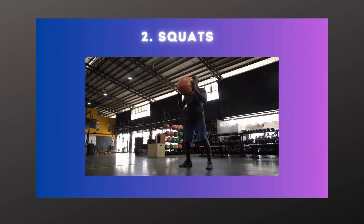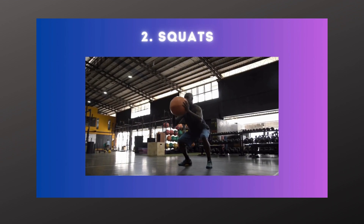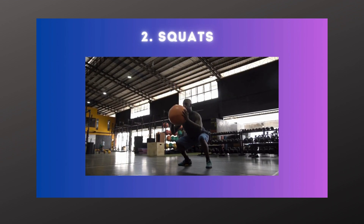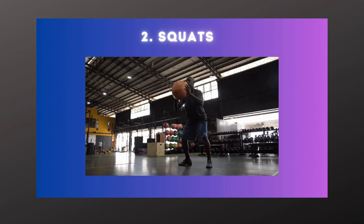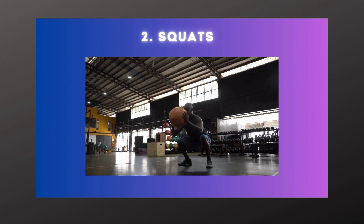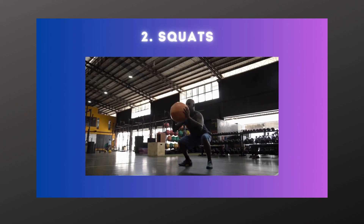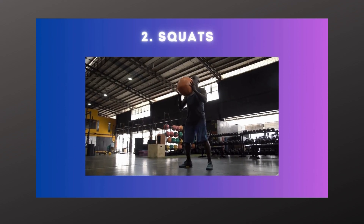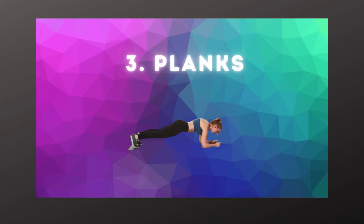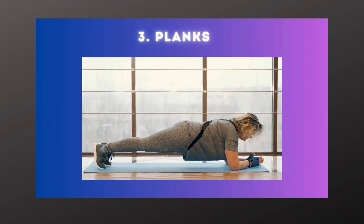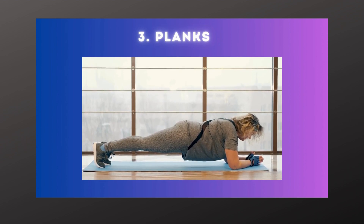Squats are a compound exercise that target multiple muscle groups including the quadriceps, hamstrings, glutes, and core. They build lower body strength, improve overall balance, and increase flexibility. Planks are a core strengthening exercise that improve overall stability and posture. They engage multiple muscle groups including the core, back, shoulders, and legs.